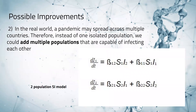Another possible improvement is that in the real world, a pandemic may spread across multiple countries. Therefore, instead of one isolated population, you could have multiple populations that are capable of infecting each other. The figure on the right shows an SI model for two populations. The change in infections over time in population one, for example, is equal to the rate at which infected individuals from population two come into contact with those who are susceptible from population one, added to the rate at which infected individuals from population one come into contact with those who are susceptible from population one.